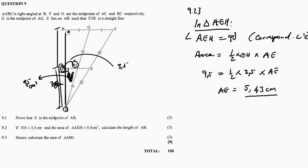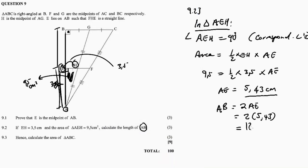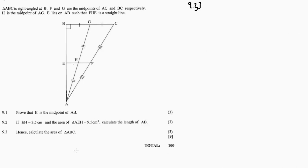Since E is the midpoint, AB equals 2 times AE. Therefore AB equals 2 times 5.43, which gives us 10.86 centimetres. That is our answer for 9.2.